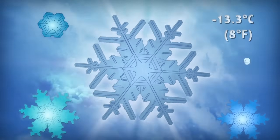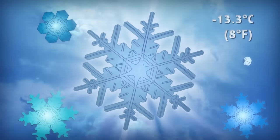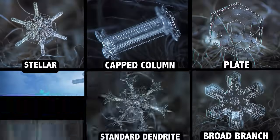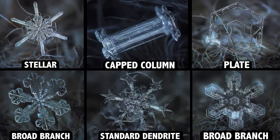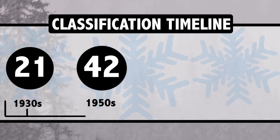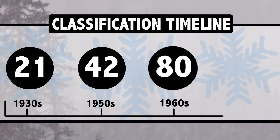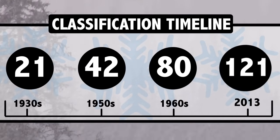Over the years, crystallographers have been classifying snow crystals into different categories based on their arrangement of atoms. In the 1930s, there were 21 different classifications of snowflake, but by 2013 that number soared to 121.